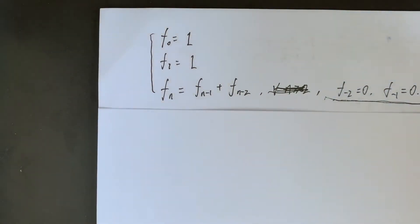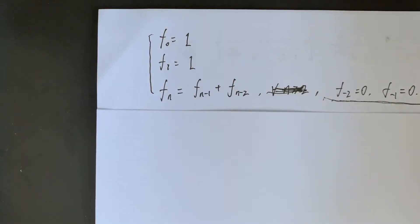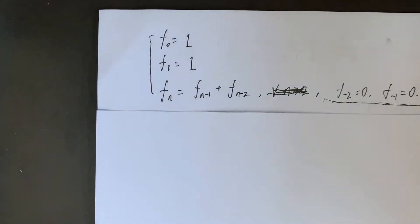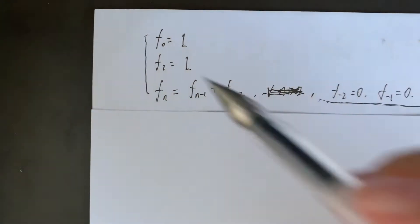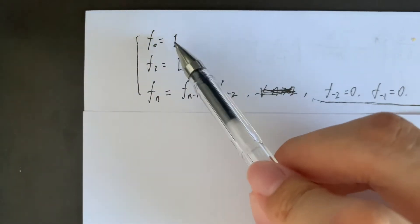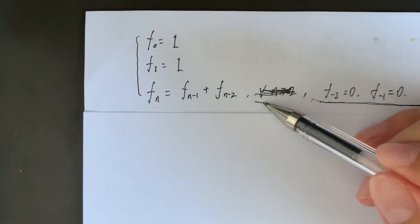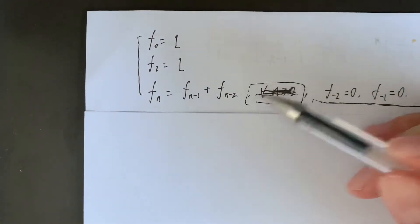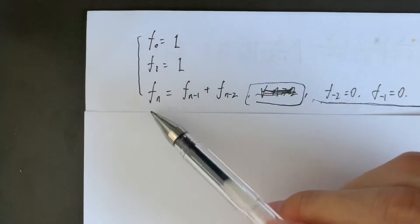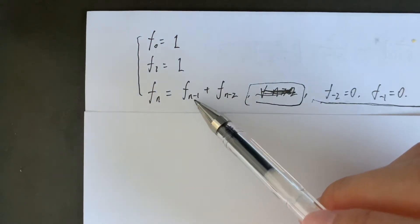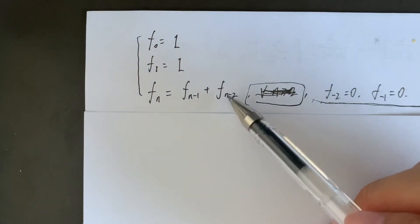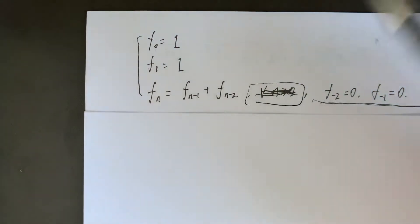This video is about applying generating functions to solve a recurrence for the Fibonacci sequence. First, take a look at the Fibonacci sequence expression. We have F(0) equals 1, F(1) equals 1, and when n is greater than or equal to 2, F(n) equals F(n-1) plus F(n-2).